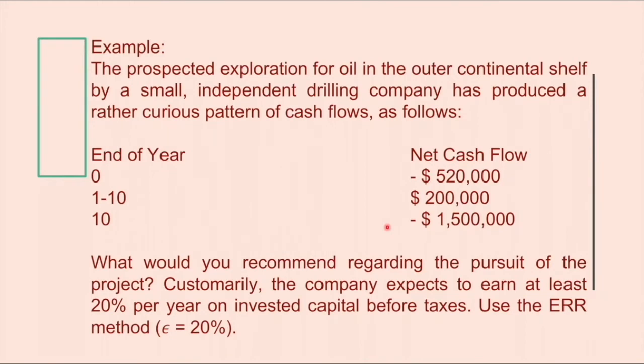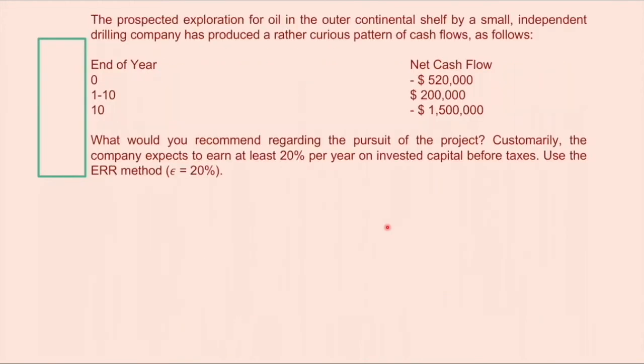So to start the solution, we will draw the cash flow diagram of this problem. And this is it. So the $520,000 and the $1,500,000 are the costs. And the benefits is $200,000 every year from end of year 1 to end of year 10.